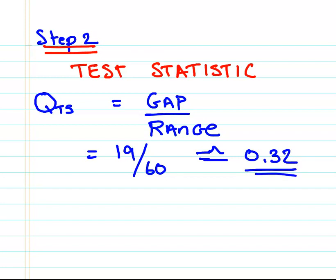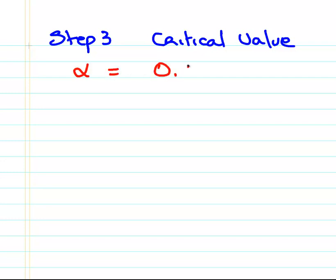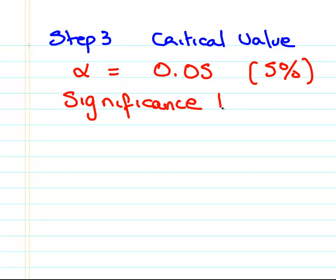Now, the next part is the critical value. So step three is the critical value. Now, for this particular procedure, what you have to do is first off, determine the significance level. And we're going to pick 0.05, also known as 5%. And this is our significance level. Usually you're told to do this in advance. And usually for undergraduate statistics, it's always 0.05. Sometimes 0.01, but you're usually given some sort of indication.